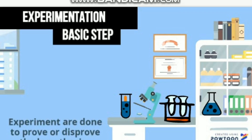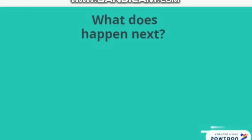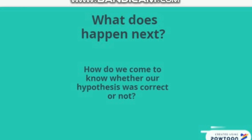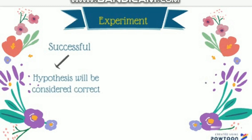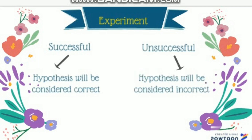Experiments are done to prove or disprove the hypothesis. If experiments are successful, then the hypothesis is considered correct. If the experiments are unsuccessful, then the hypothesis is considered incorrect. The correct hypothesis is considered proved and incorrect hypotheses are rejected.